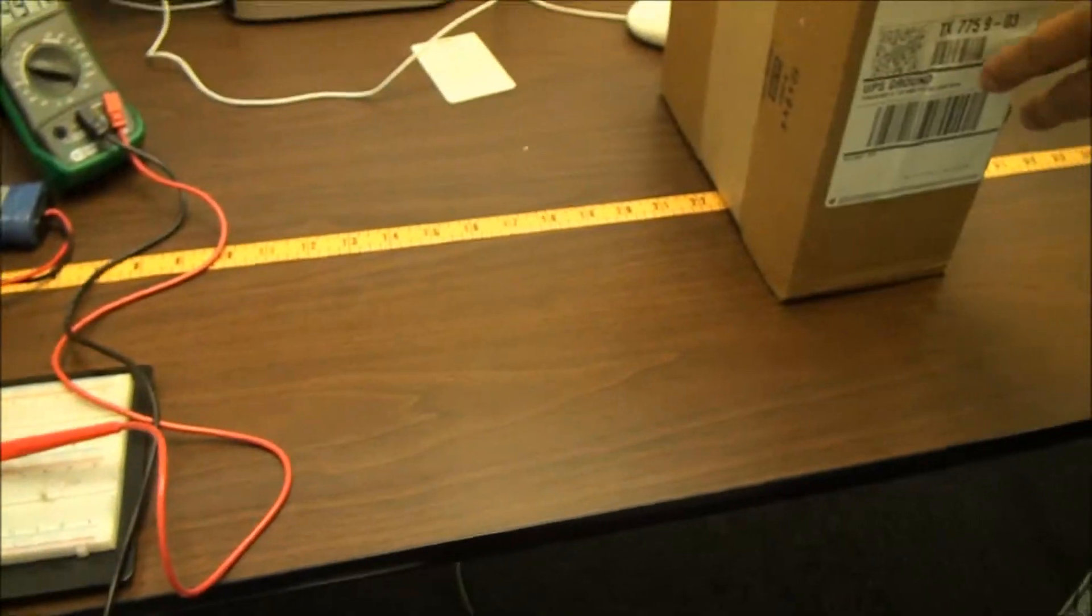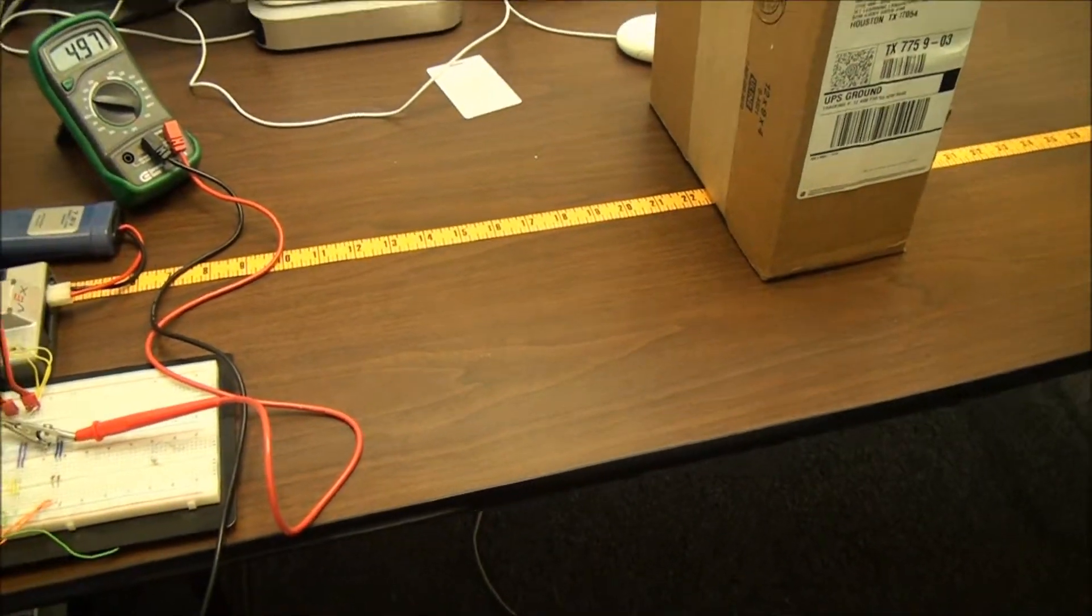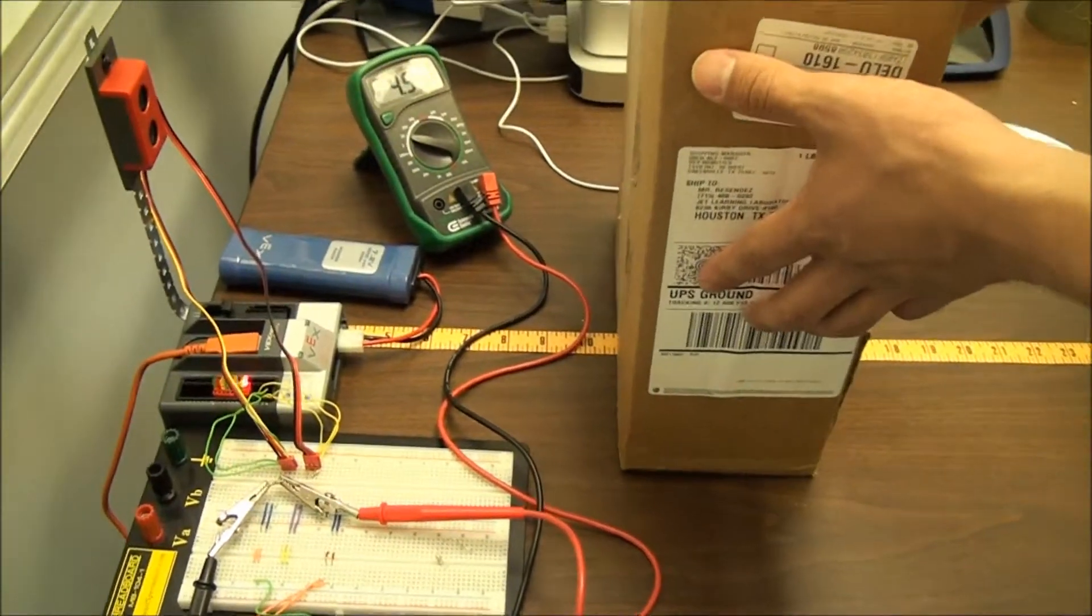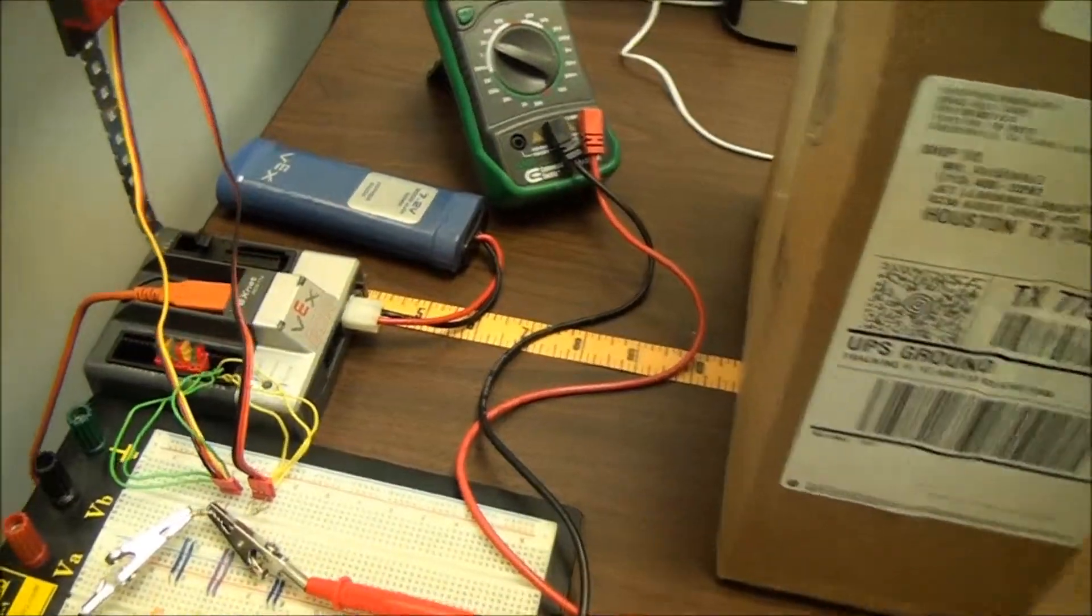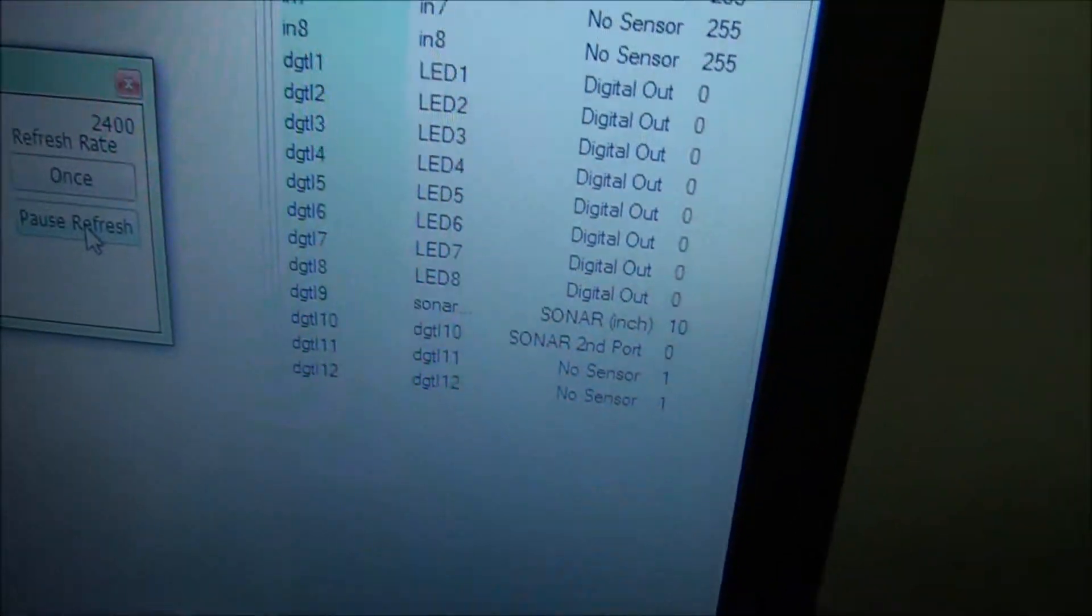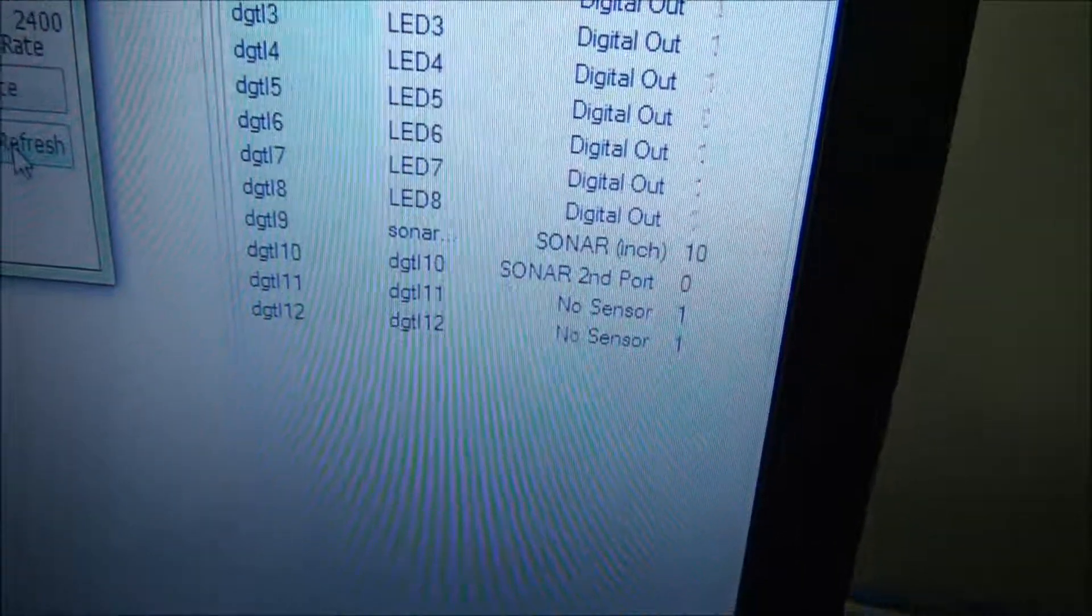The one that we're concerned about is if it's within a foot. So once we get within a foot range of this, say 10 inches, we have a blinking LED sequence letting us know that something's near, and the value for the sonar is 10.